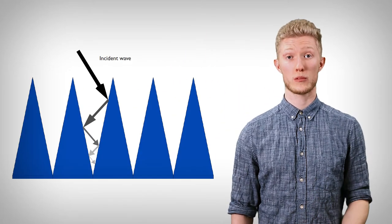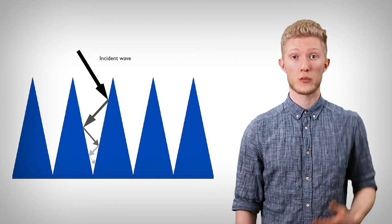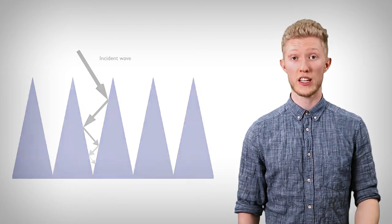Pyramidal absorbers use two different principles to reduce reflected rays across a broad band of frequencies. Firstly, repeated reflection, which is the property of the square pyramid shape, maximizes the number of bounces a wave makes within the structure. With each bounce, the incident wave loses energy to the material in the form of heat.